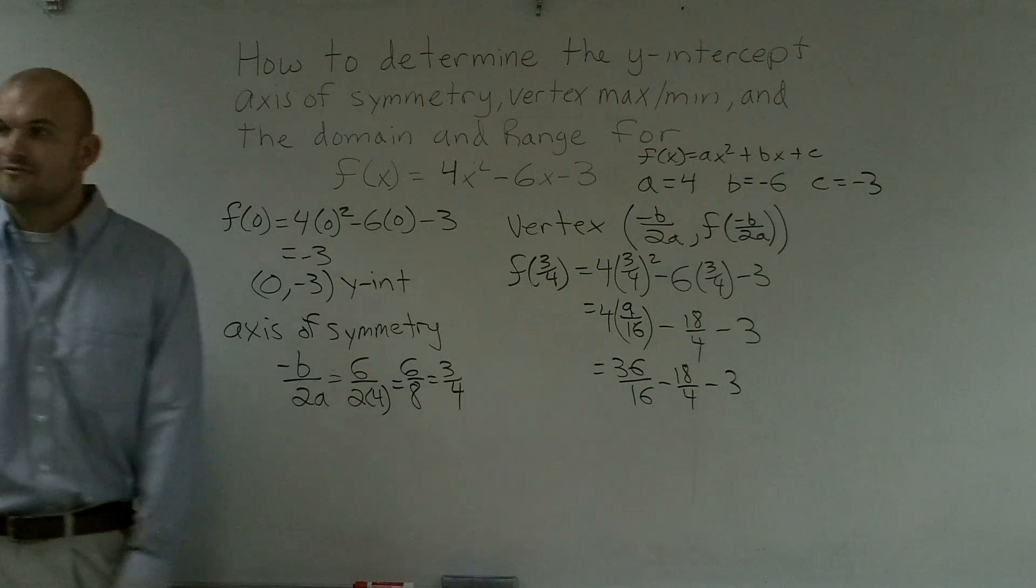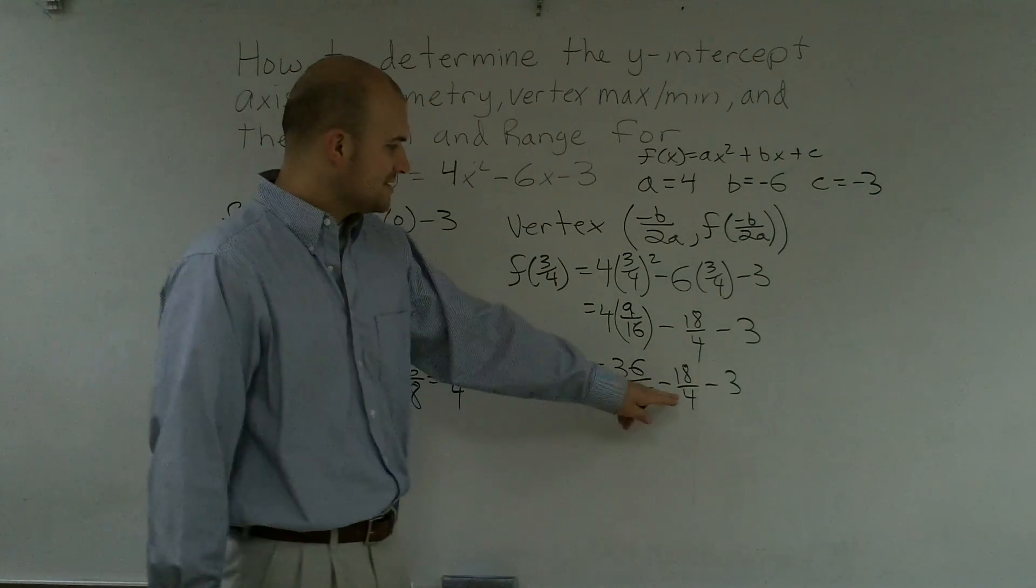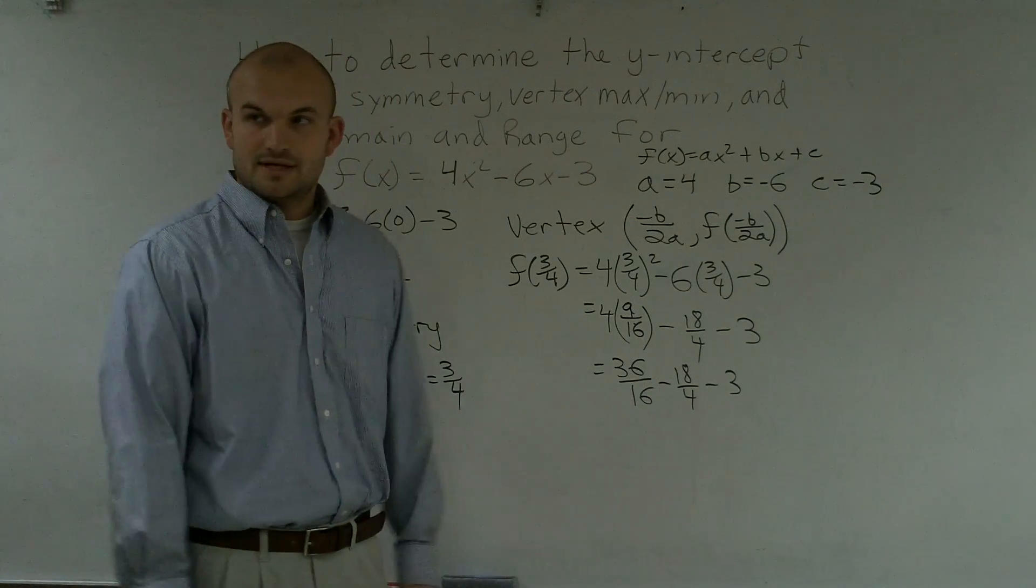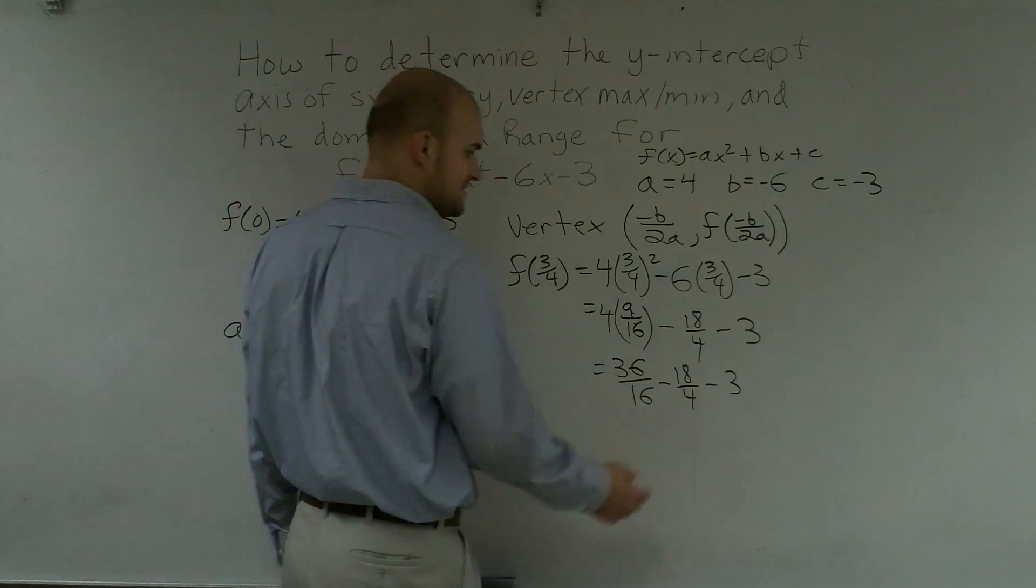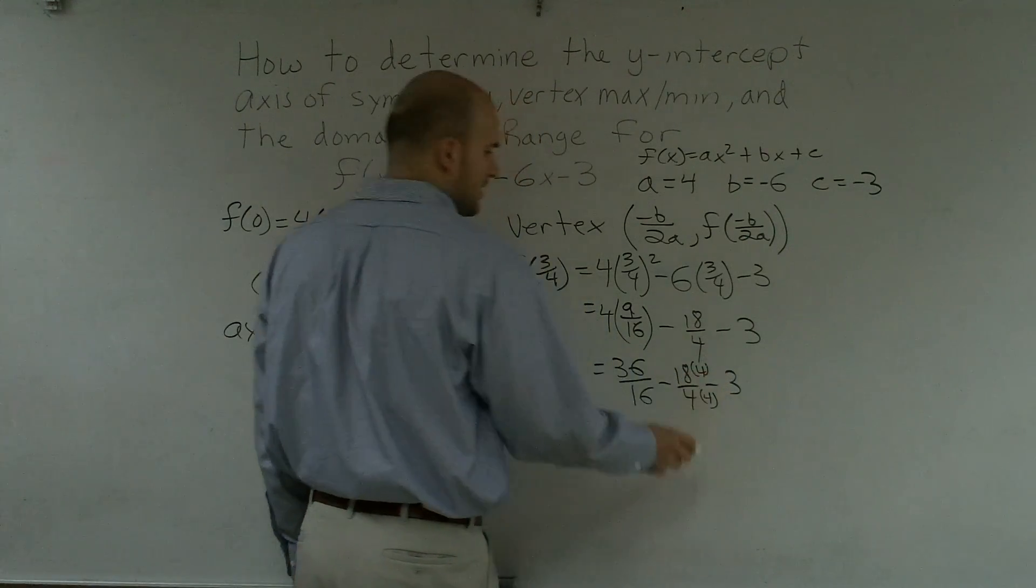And then multiply across here, so you get 36/16 - 18/4 - 3. And for those of you that forget how to multiply fractions, what you need to do is you need to get them all to be common denominators. So it looks like your common denominator is going to be 16. So therefore, to get this to be 16, I'm going to multiply by 4/4.